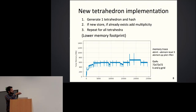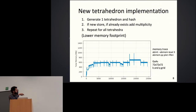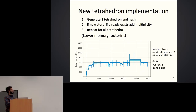Memory usage during the run can be traced using Abinit level 3 memory tracing, introduced by Matteo, together with a Python script to plot memory usage as the code runs. This is quite useful to identify where the large memory allocations occur.